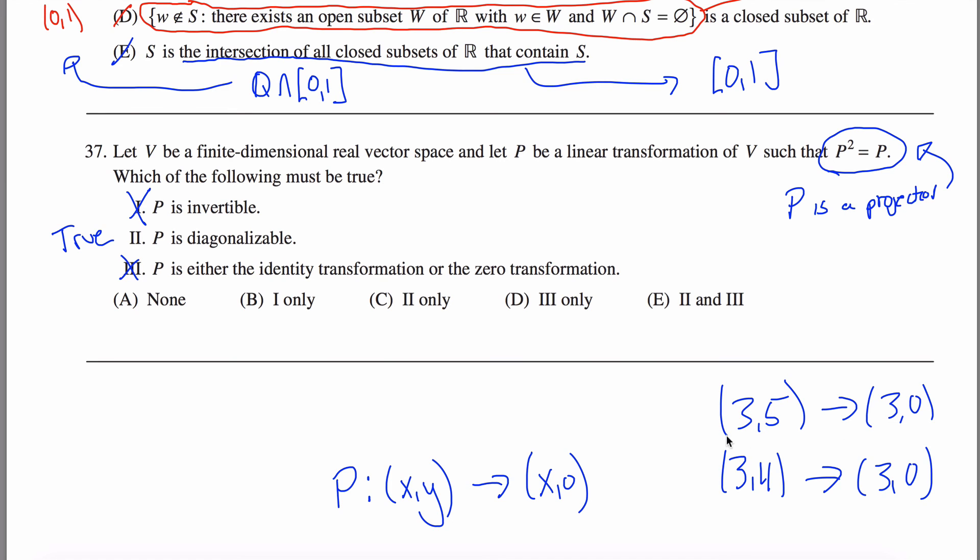Here is a projection that I came up with that is not the identity transformation nor the zero transformation. So while these two guys are projections, a projection is not necessarily one of these two guys. So the only one that must be true is statement II here. The answer would be C.